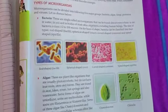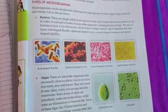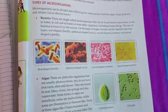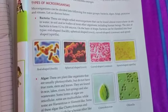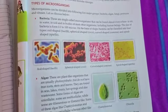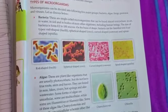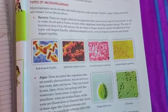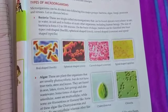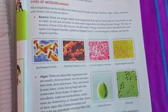जैसे — हवा में, पानी में, मिट्टी में, और living beings के body में भी ये पाया जाता है। The size of bacteria ranges from 0.2 to 100 micron. इसका आकार 0.2 से 100 micron तक का होता है।